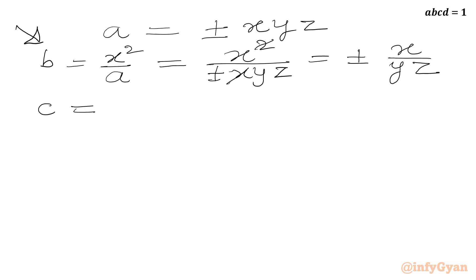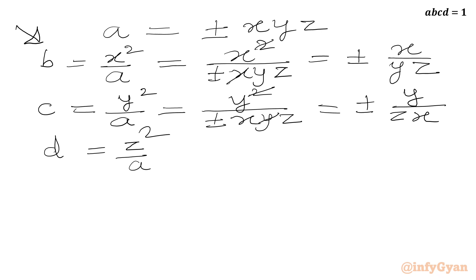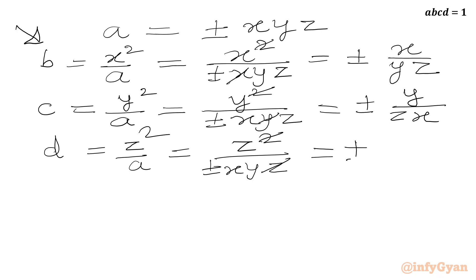Now we calculate C = y²/A = y²/(±xyz). Cancelling y gives C = ±y/(zx). The value of D = z²/A = z²/(±xyz). Cancelling z gives D = ±z/(xy). Now we have A, B, C, and D all expressed in terms of x, y, z.